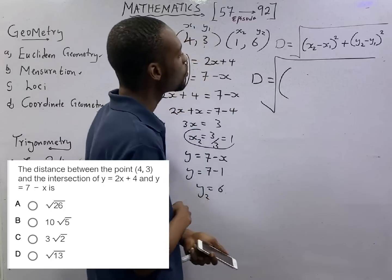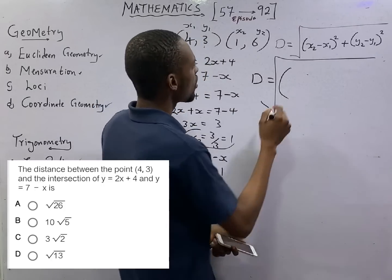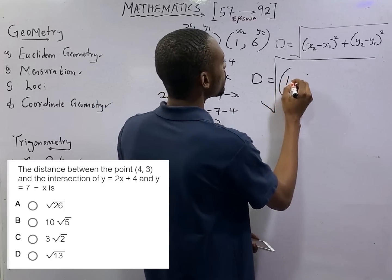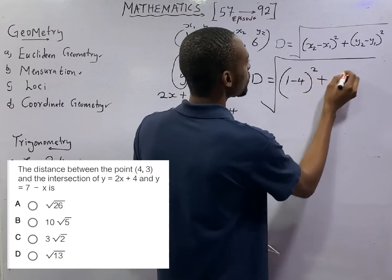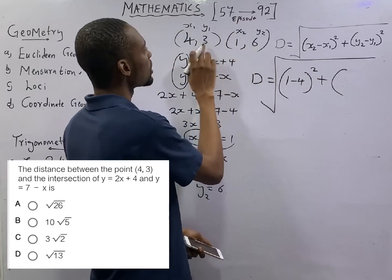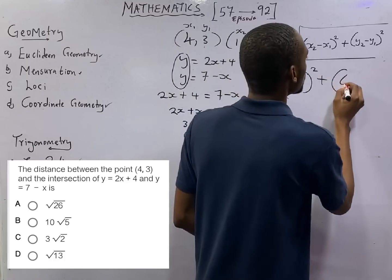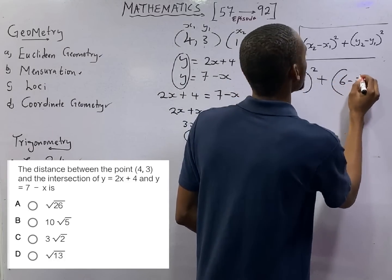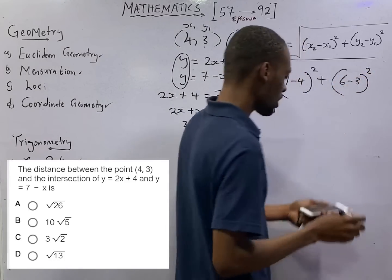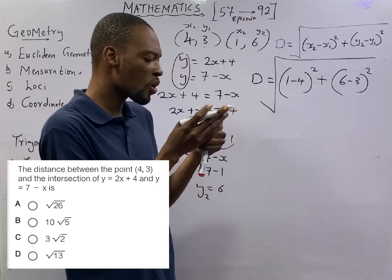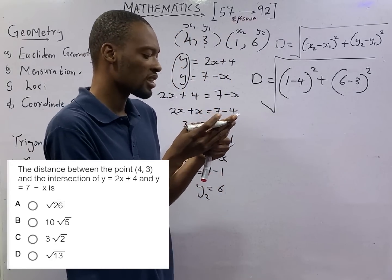x2, 1 minus 4 squared plus y2 minus y1, 6 minus 3 squared. And please be always, always careful.